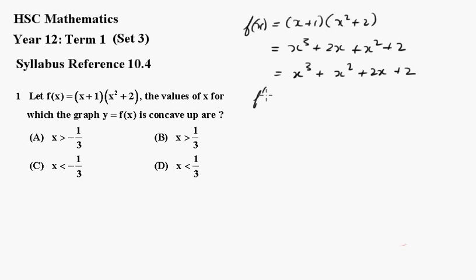The first derivative equals 3x squared plus 2x plus 2. Second derivative, that's 6x plus 2.